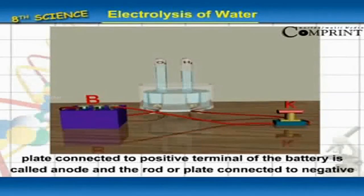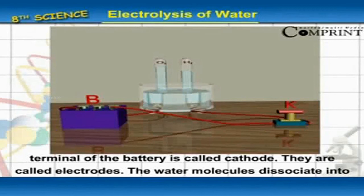The copper rod or plate connected to the positive terminal of the battery is called anode and the rod or plate connected to the negative terminal of the battery is called cathode. They are called electrodes.